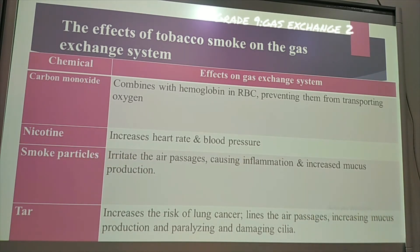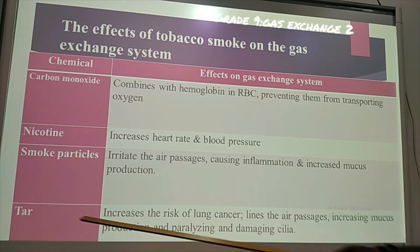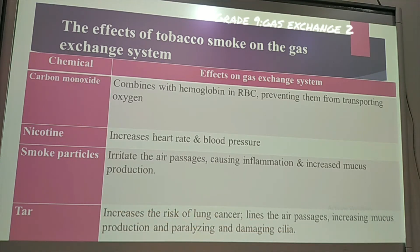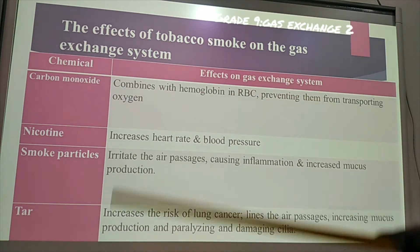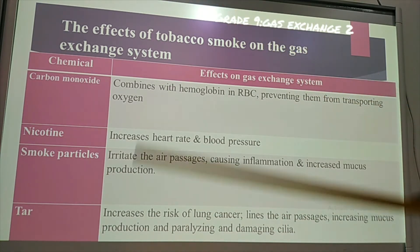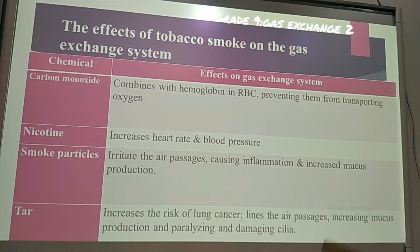Smoke particles irritate air passages and cause inflammation — it makes the passages enlarged — and increased mucus production. Tar increases the risk of lung cancer. It also increases mucus production, and it can paralyze and damage the cilia. So these are the effects of the chemicals in tobacco smoke on the gas exchange system.